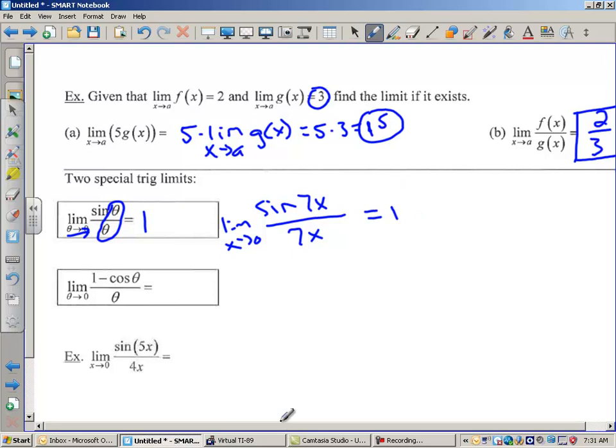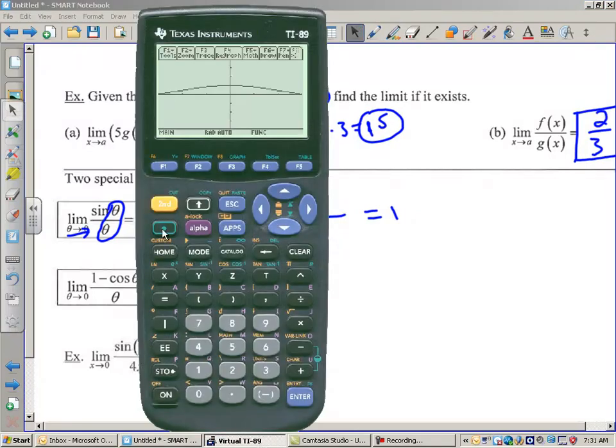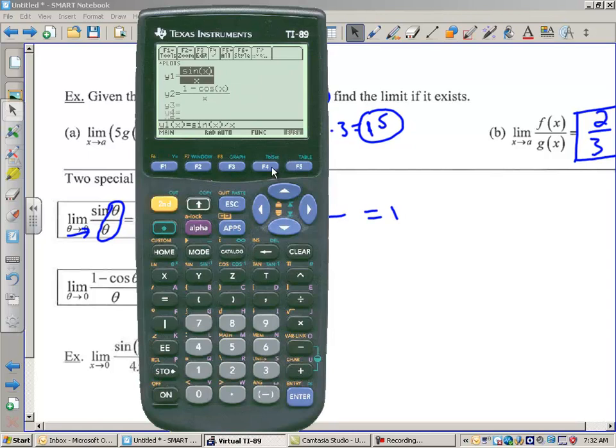Let's go back and look at the 1 minus cosine x over x. And that graph, I'm going to get back to y equals here. We'll turn that one off, come down and turn this one on, and then we're going to graph it. This is a little different picture. From the left, we're approaching 0. And from the right, we're approaching 0. So that answer is 0.